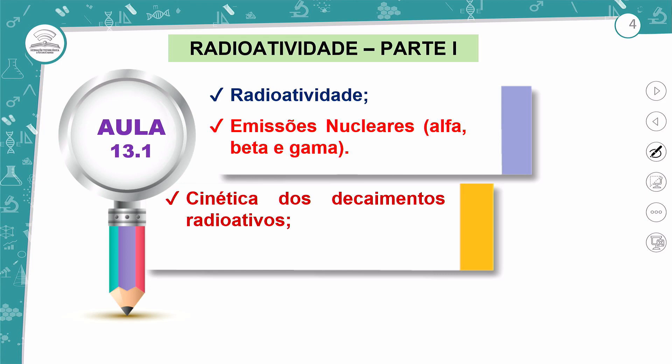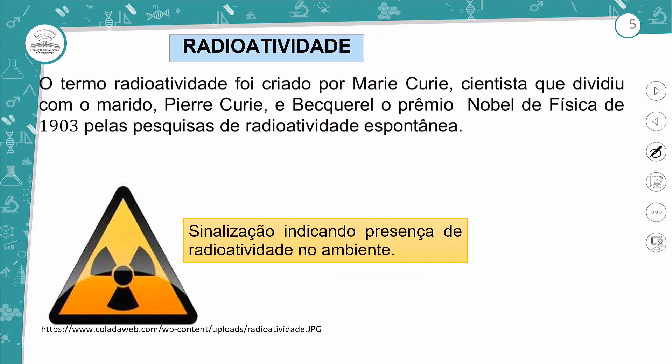Lembrando que na Radioatividade Parte 1, vamos conhecer o conceito de radioatividade, as emissões nucleares — ou seja, o que são partículas alfa, partícula beta e partícula gama — além de aprender sobre cinética dos decaimentos radioativos. Tudo isso nesta aula de número 13, onde abordamos a Radioatividade Parte 1.